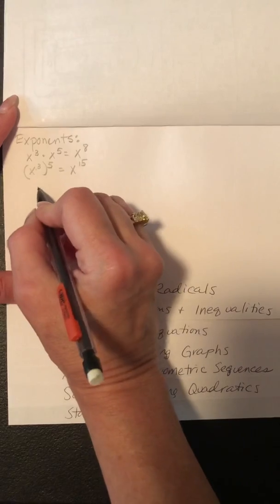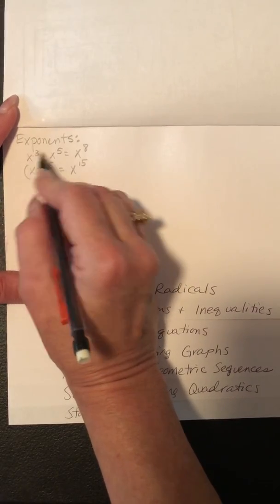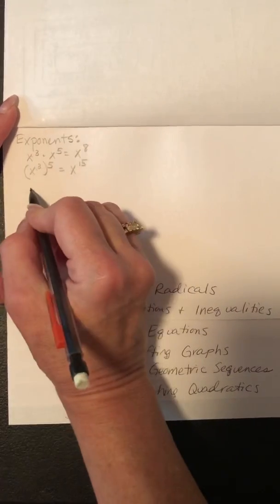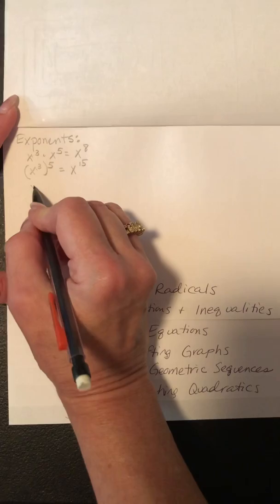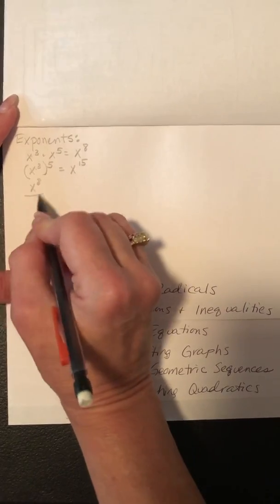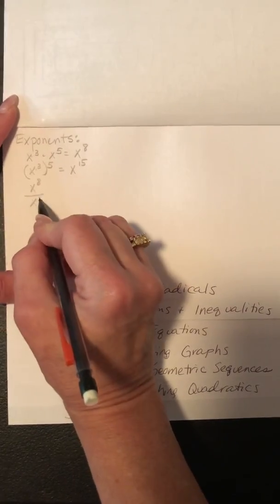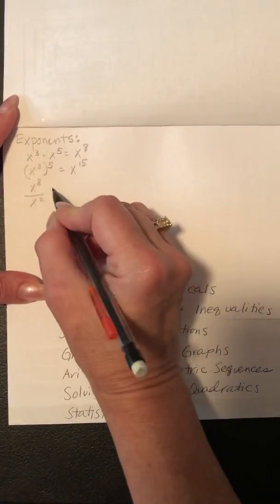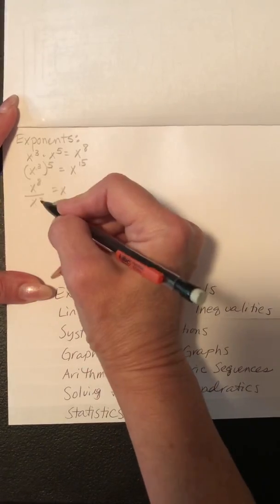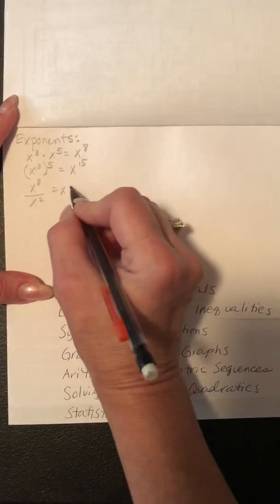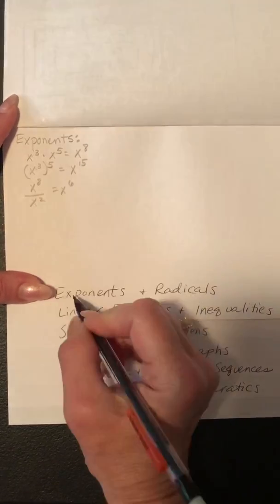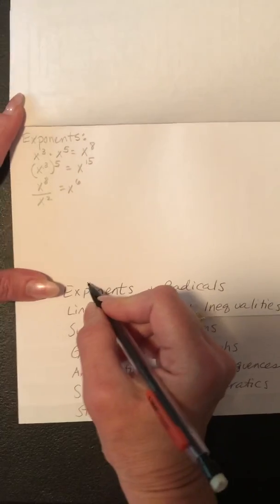If you have a division — so when you're multiplying, you add — when you divide, you subtract. So you would keep the x the same and then subtract, for example 8 minus 2 to get 6.